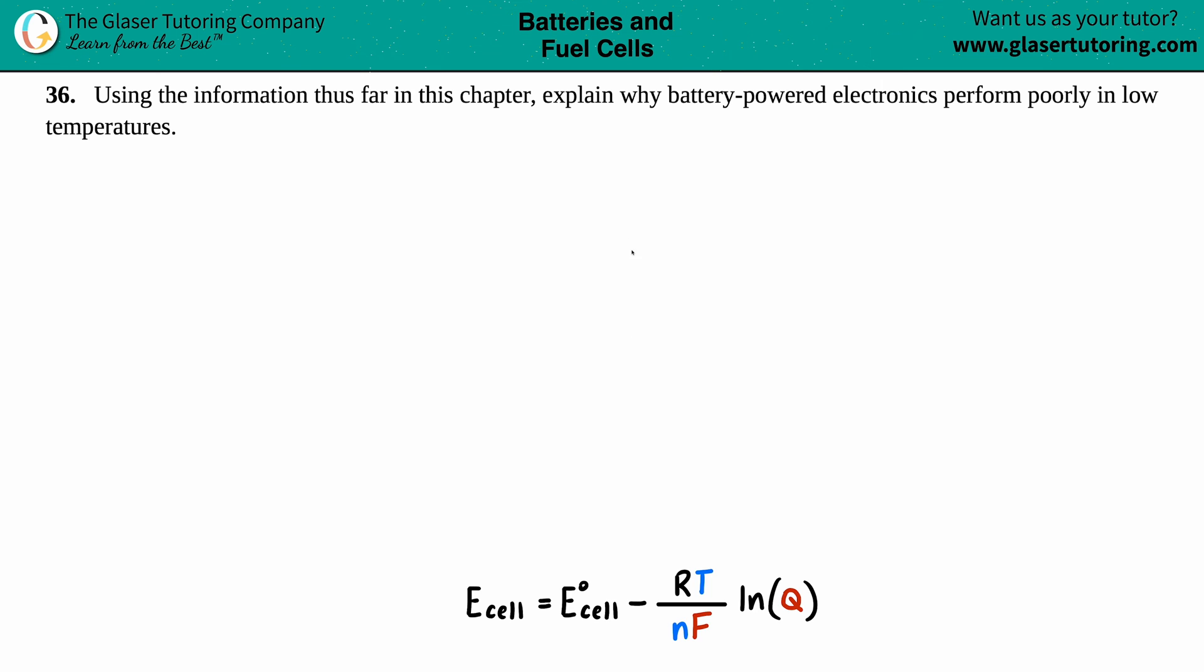Number 36. Using the information thus far in this chapter, explain why battery-powered electronics perform poorly in low temperatures.